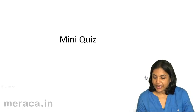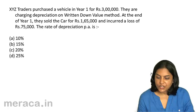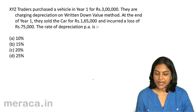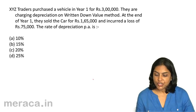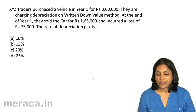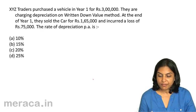Let us now take a quiz to test our understanding of the entire session. XYZ Traders purchased a vehicle in Year 1 for Rs. 3 lakhs. They are charging depreciation under the written down value method. At the end of Year 1, they sold the car for Rs. 1,65,000 and incurred a loss of Rs. 75,000. The rate of depreciation per annum is?